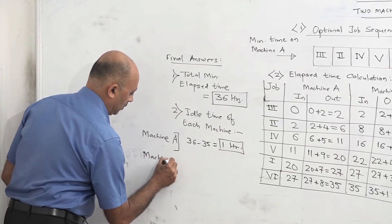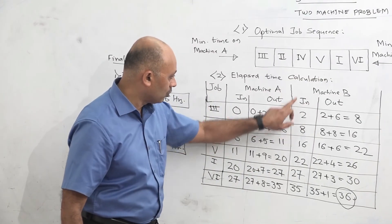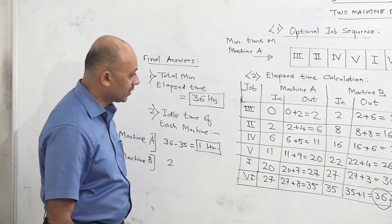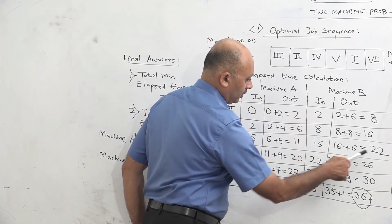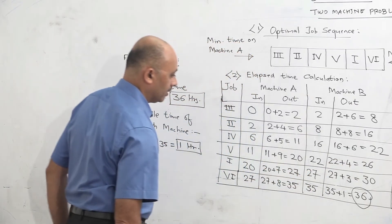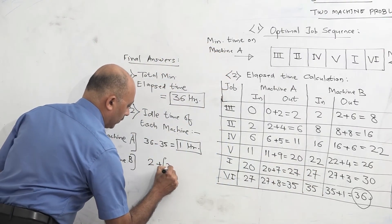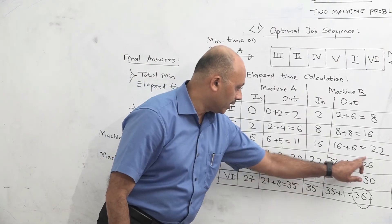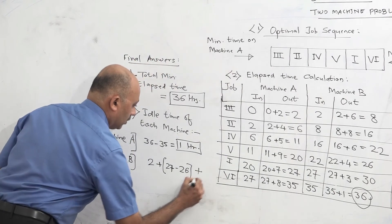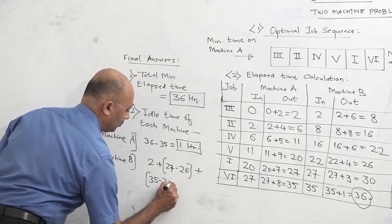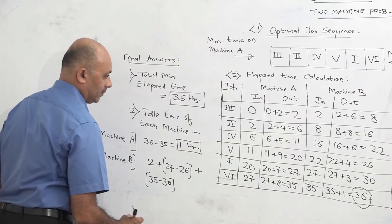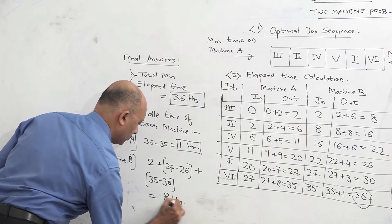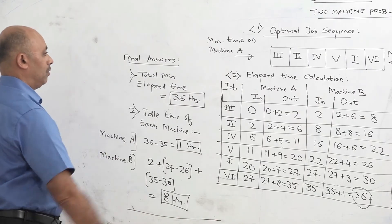For machine B: the first job's in time is 2 hours, so machine B is idle from 0 to 2 — that is 2 hours idle. Check continuity: 2–8, 8–16, 16–22, 22–26, then 27. Continuity breaks from 26 to 27 — that is 1 hour idle. Then 27–30, then 35. Continuity breaks from 30 to 35 — that is 5 hours idle. Total idle time for machine B: 2 plus 1 plus 5 equals 8 hours.